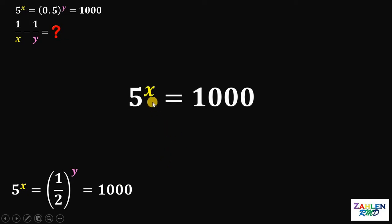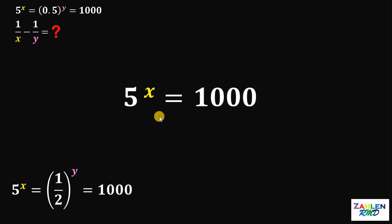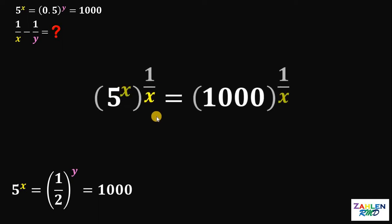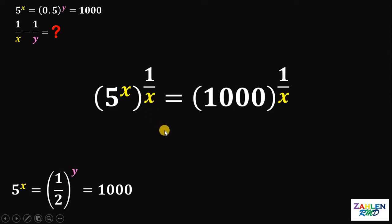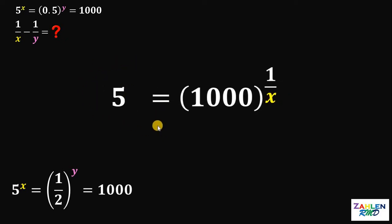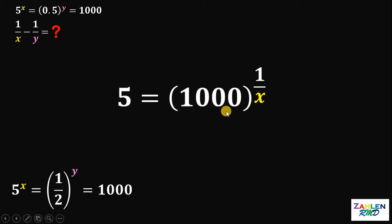What we're going to do here is to eliminate x as the exponent of 5. To do that, we need to raise both sides by 1 over x, so x times 1 over x gives us 1. Thus, the left-hand side of our equation becomes 5, and it is equal to 1000 raised to 1 over x.